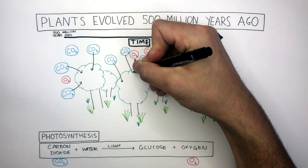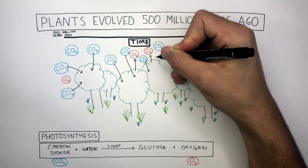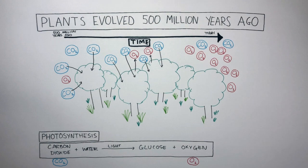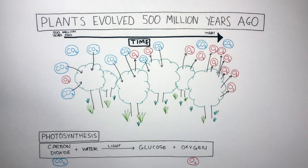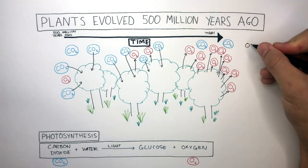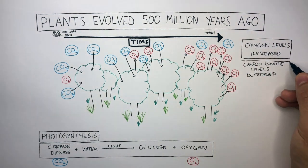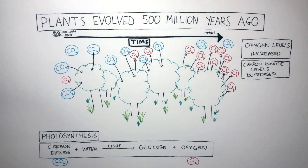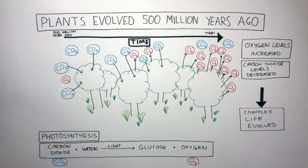Over many millions of years, this process continued, taking in more and more carbon dioxide. Over time, this resulted in there being a lot of oxygen in Earth's atmosphere, released mainly by land plants, helped by algae and cyanobacteria as well. Due to photosynthesis by land plants, oxygen levels increased dramatically and carbon dioxide levels decreased dramatically. As oxygen levels started to increase 500 million years ago, this meant complex life evolved, as larger, more complex organisms were able to live and thrive where there was more oxygen.